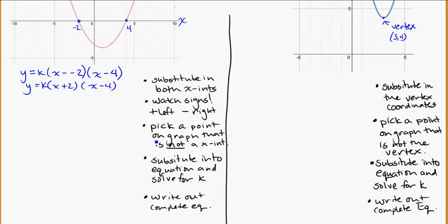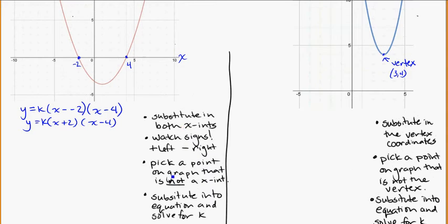Once you've substituted the intercepts, the next step is to pick a point on the graph that is not an x-intercept. Since we've already used both x-intercepts, we need a different point — otherwise the equation you solve won't be helpful. Looking carefully at the graph, I can read the point at 3 in the x-direction and negative 2 in the y-direction, so the point is (3, -2). Remember, coordinates are always x, y.